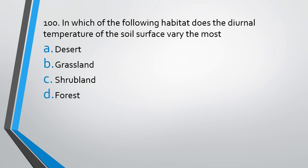Question 100. In which of the following habitats does the diurnal temperature of the soil surface vary the most? Desert, grassland, shrubland, or forest? Diurnal temperature variation means during the day the temperature is at one extreme and during the night at the opposite extreme. The correct answer is option 1 — deserts. During the day the temperature of the soil surface is very high, and during the night it becomes very cold.